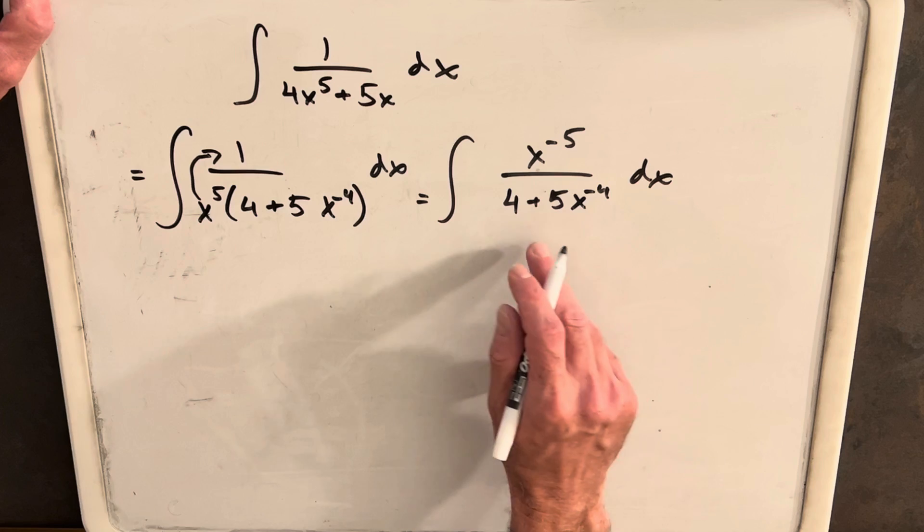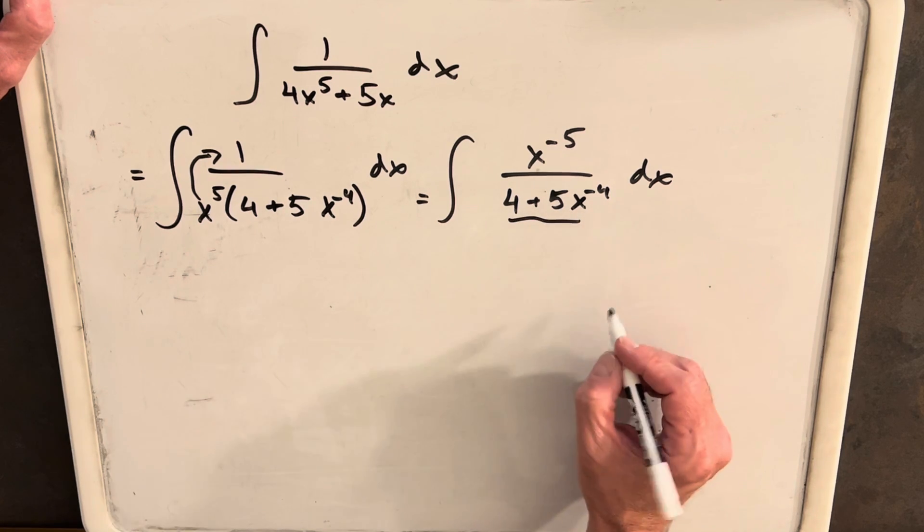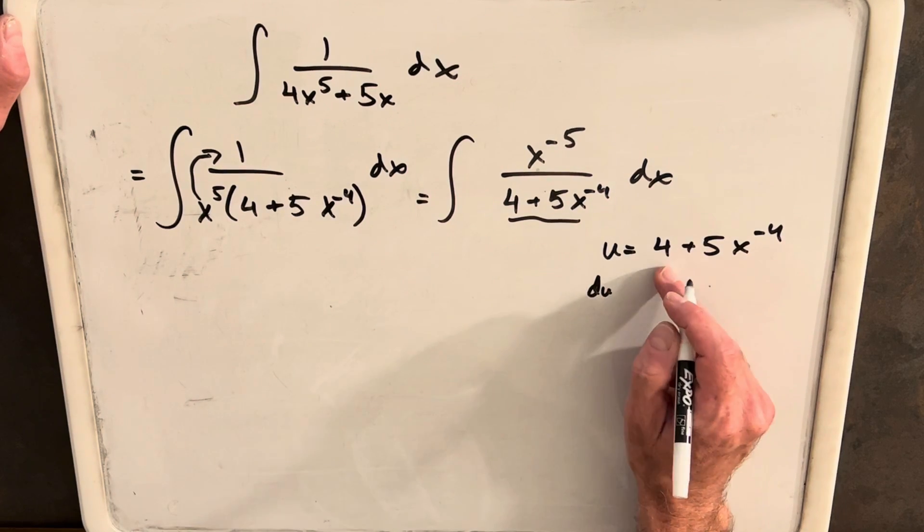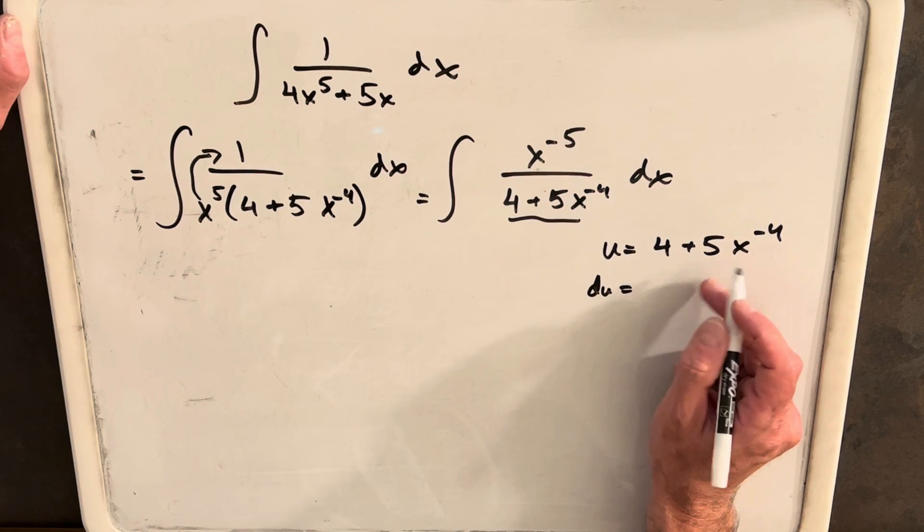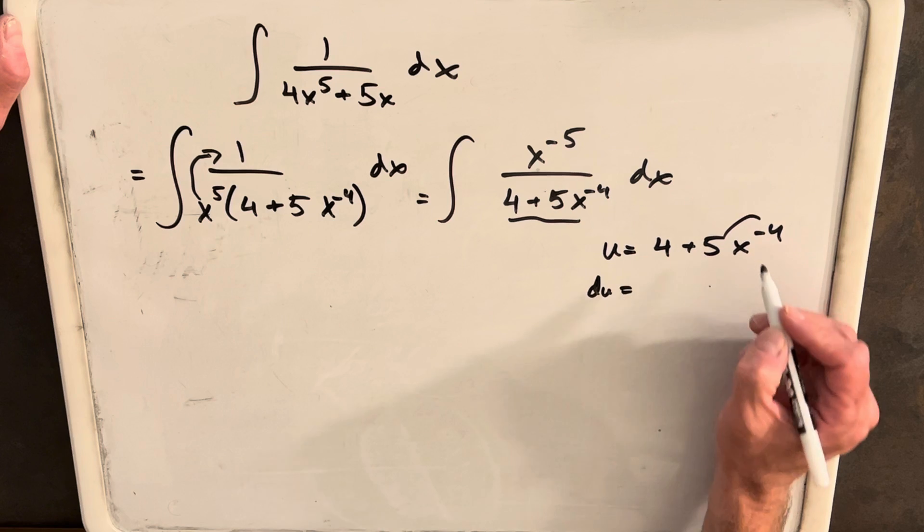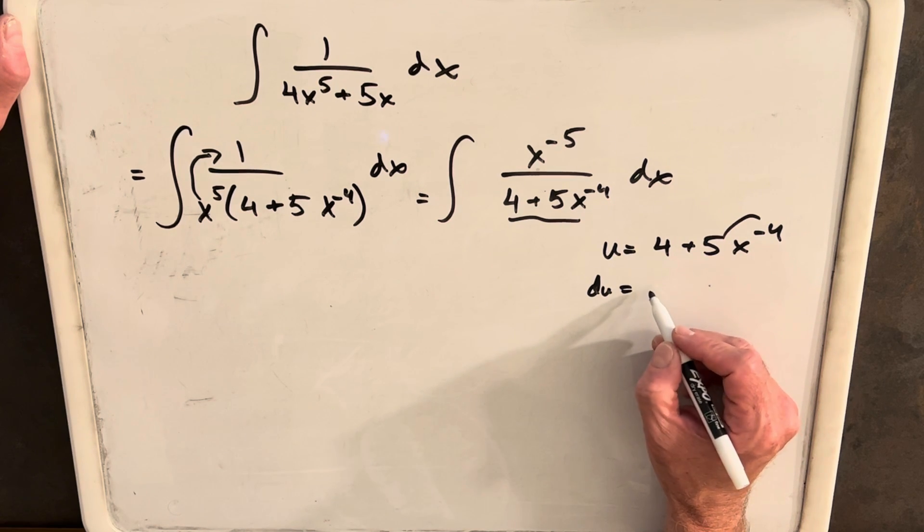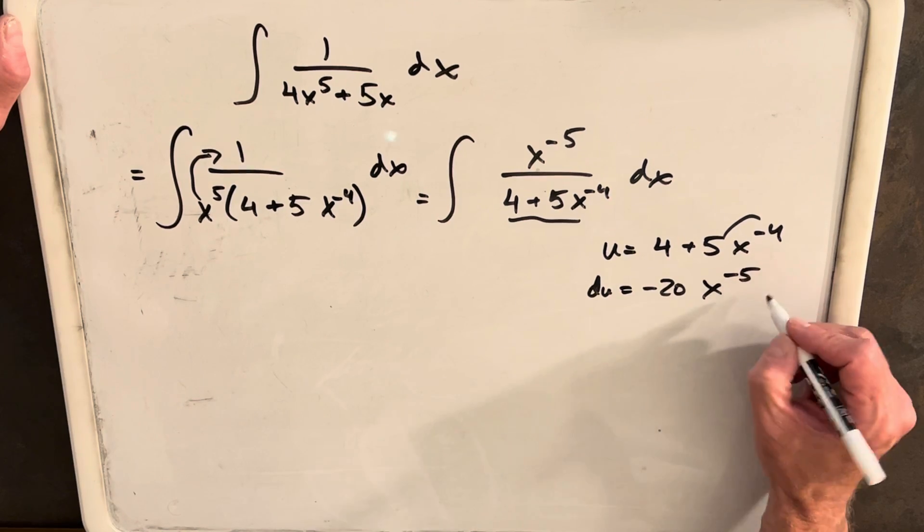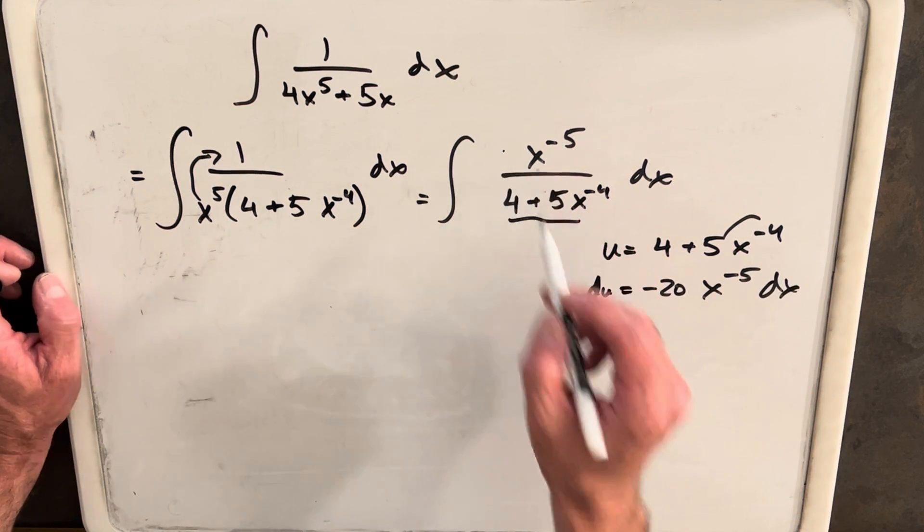And this is going to work out nice if we make this denominator a u for a u substitution. We'll take the derivative of this thing, just using the power rule. Derivative of 4 is 0. Derivative of this, we'll multiply the exponent and the coefficient. We'll have minus 20x to the minus 5th. You'll notice that's basically what we have in the numerator.